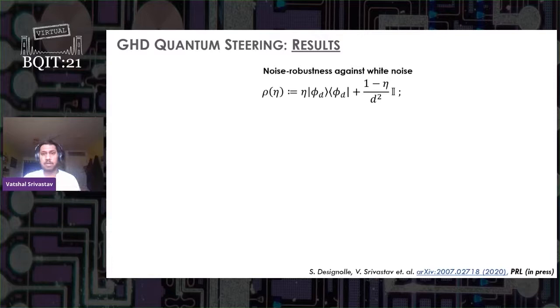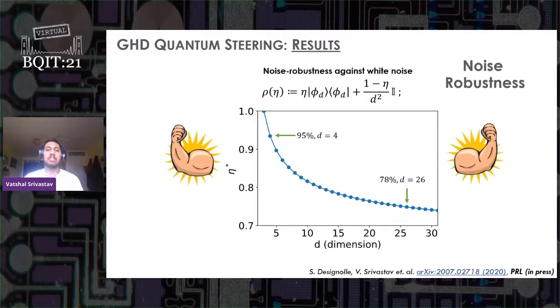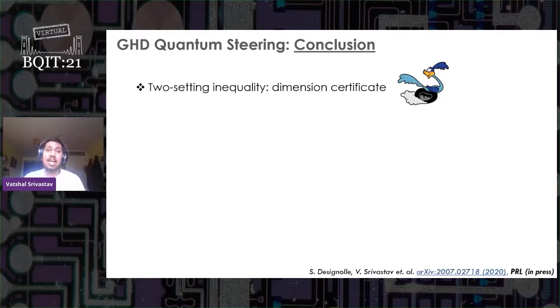Let's say a state rho is under the influence of white noise where eta is a mixing parameter. One needs eta to be greater than some threshold eta star to demonstrate, let's say, four dimensional steering. Now if you plot eta star with respect to dimension d, where d is the dimension of the Hilbert space, we show that four dimensional steering in four dimensional Hilbert space, our state visibility has to be 95 percent, while if you work in 26 dimensions, then our state could handle significant noise, therefore showcasing noise robustness.